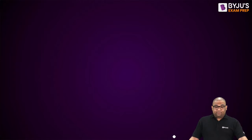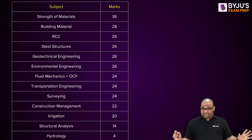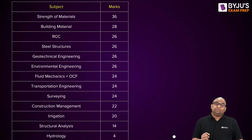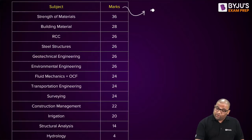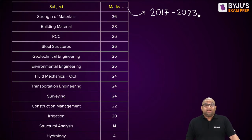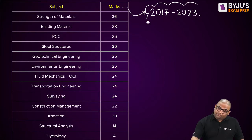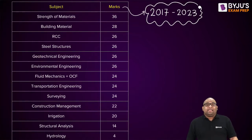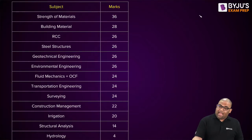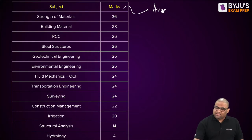Let us go straight to the subjects and their average marks. I have summarized all the subjects here. These marks are an average taken from 2017 to 2023. It's important to note that the ESC pattern changed in 2017, so we analyze papers from 2017 onward. Before 2017, things were a little different. I have observed that this average mark distribution is maintained fairly consistently over the years in the prelims examination.